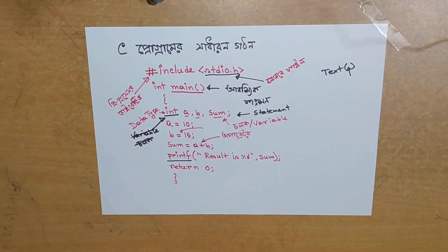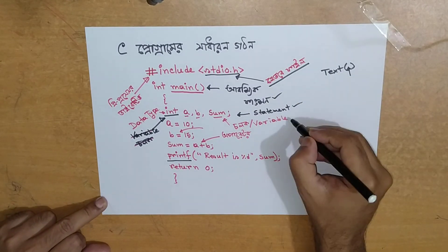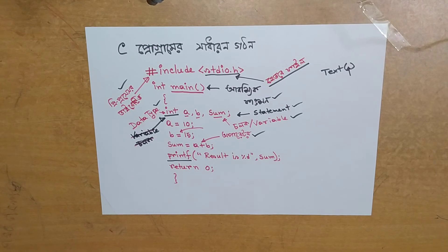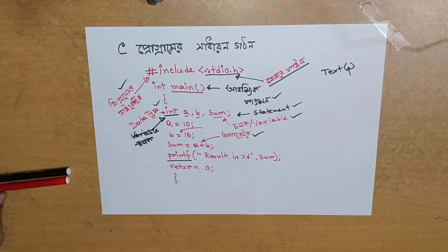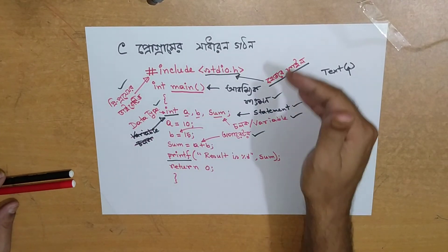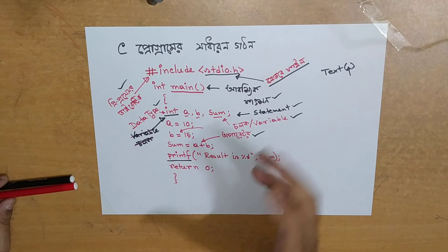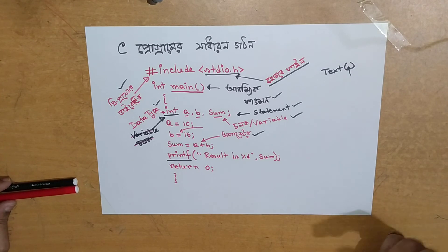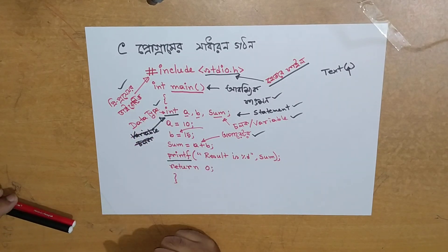I am going to call out the key terms: operator, header file, statement, function, variable, data type, preprocessor directive, and operator. I am going to talk about this C programming. Thank you so much for joining us today, and we'll see you in the next one.